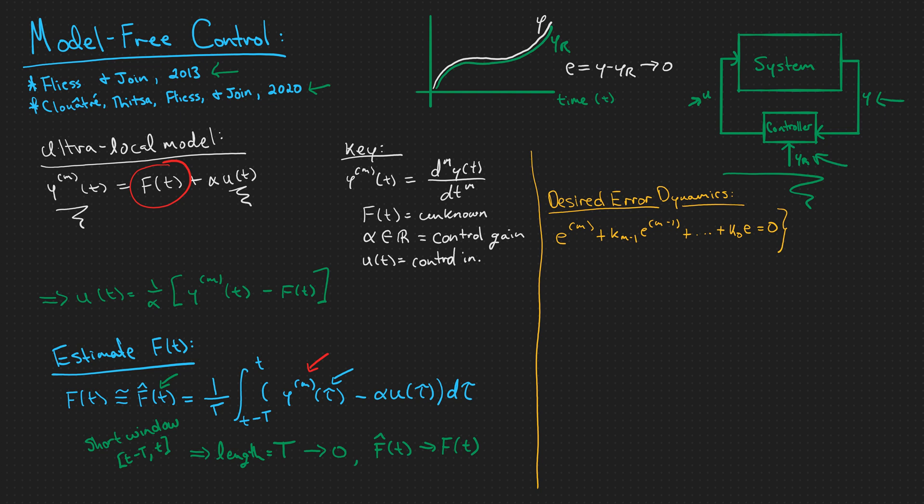And they would take this form right here where we have e's m-th derivative plus some gain k m-1 times e's m-1 derivative all the way down to some gain k0 times the error itself. And we would want that to be equal to 0. This is called a linear homogeneous differential equation. And the reason that this is desired is that we can tune these gains, these k's, such that the error will converge to 0 in finite time.